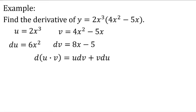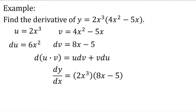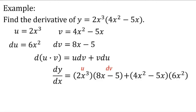d of uv equals u dv plus v du. So dy over dx equals 2x cubed times 8x minus 5 — that is our u dv. Our u is 2x cubed and our dv is 8x minus 5. Then plus v du. Justine answers: v du is 4x squared minus 5x times 6x squared. Very good, Justine. So that will be our plus v du.